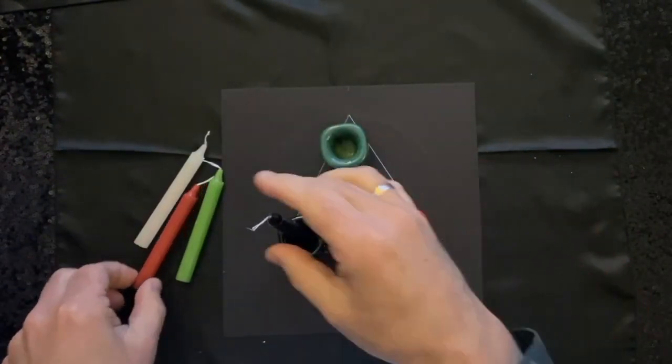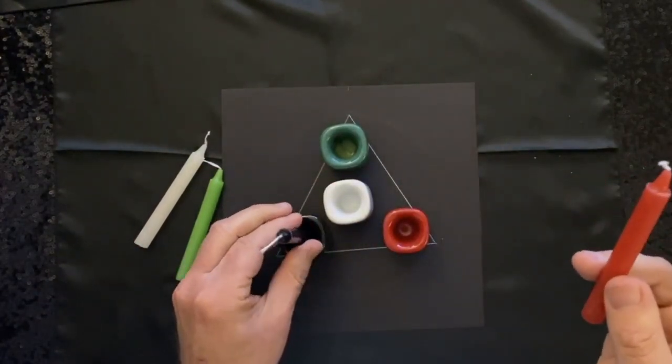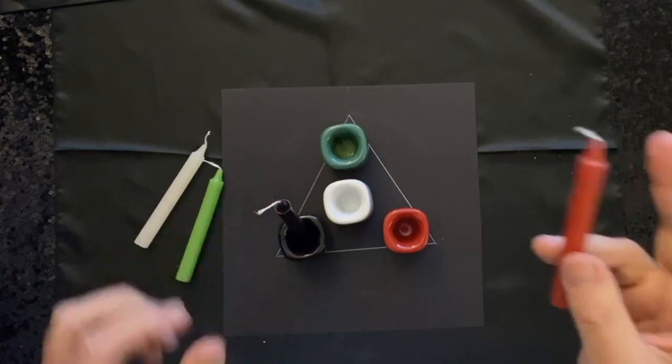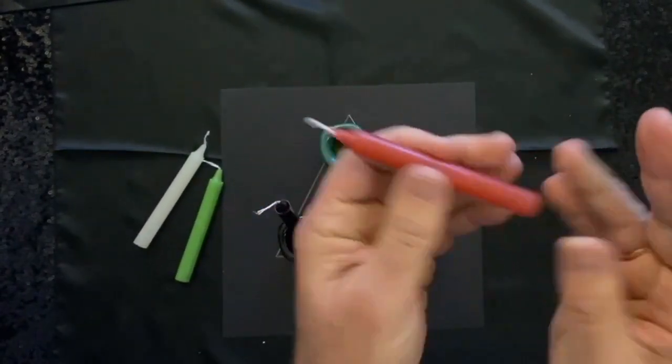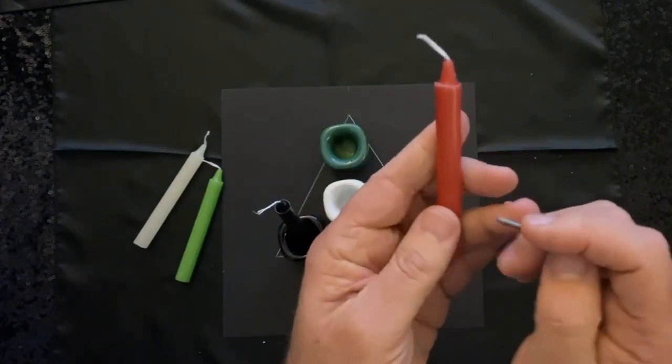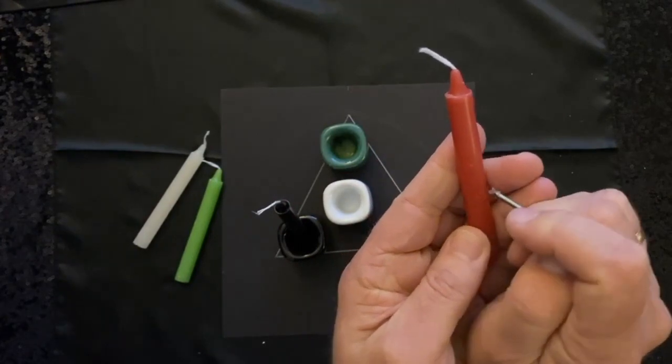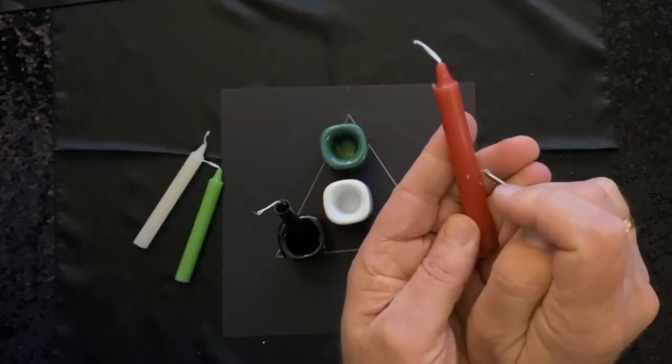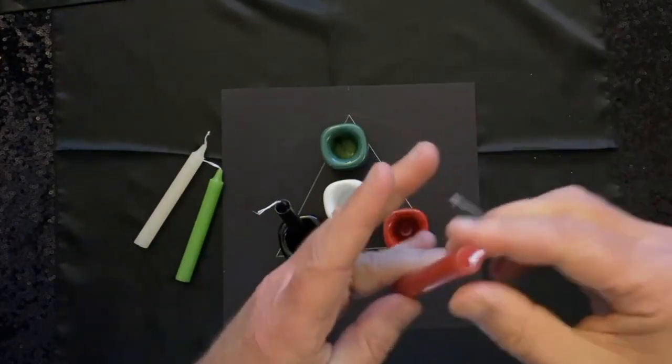And then we're going to take the red candle and we're going to do something similar. We're going to think about all the anger or unfocused thinking, all the fights or arguments, anything that's unfocused, any negative Mars energy. And we're going to draw the symbol for Mars as we're thinking of those qualities. And then we'll stick this in its candle holder as well.